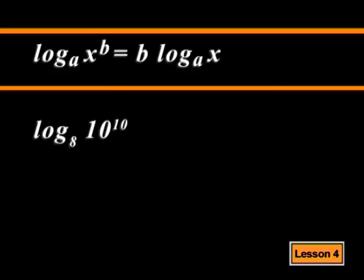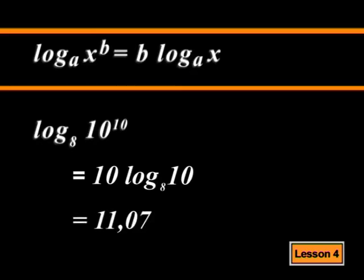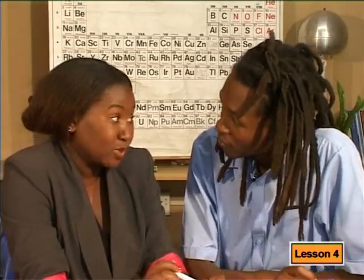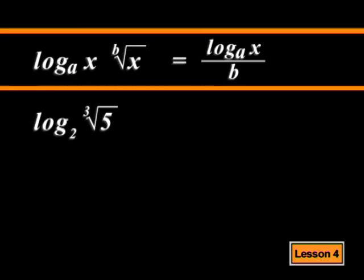Law 5 says that if the number is raised to a power, you can move the power to the front of the log and multiply. So I move the 10 to the front and multiply by the log. Now, the last law. Apply this law in this expression. If I apply the law, I get log base 2 of 5 all divided by 3.